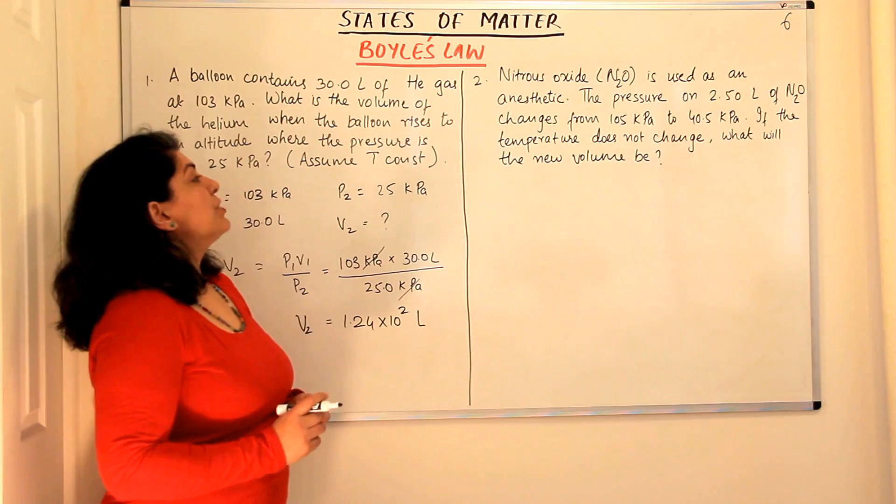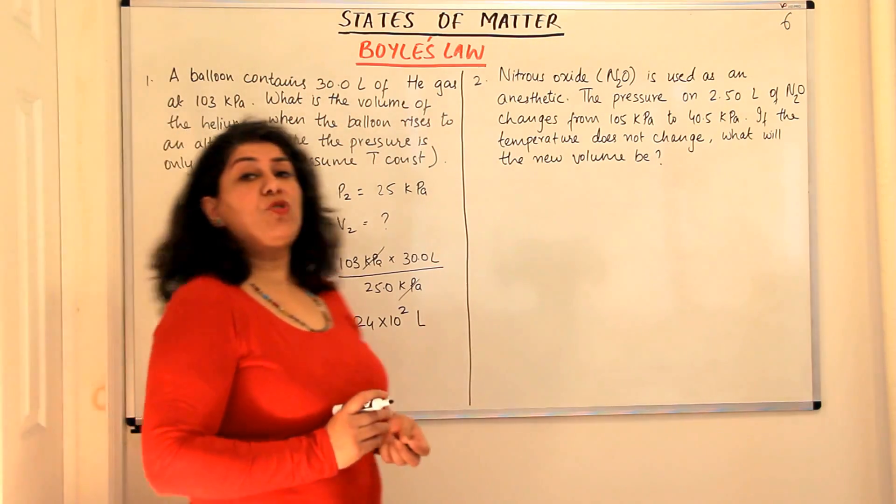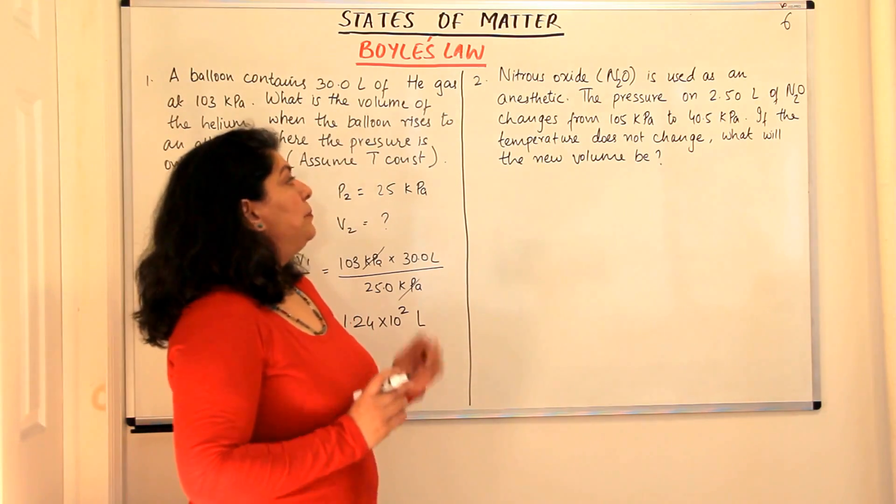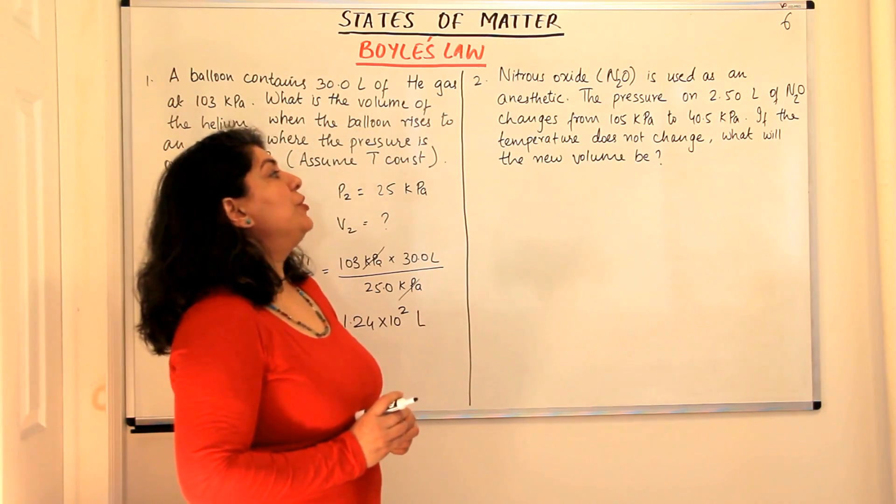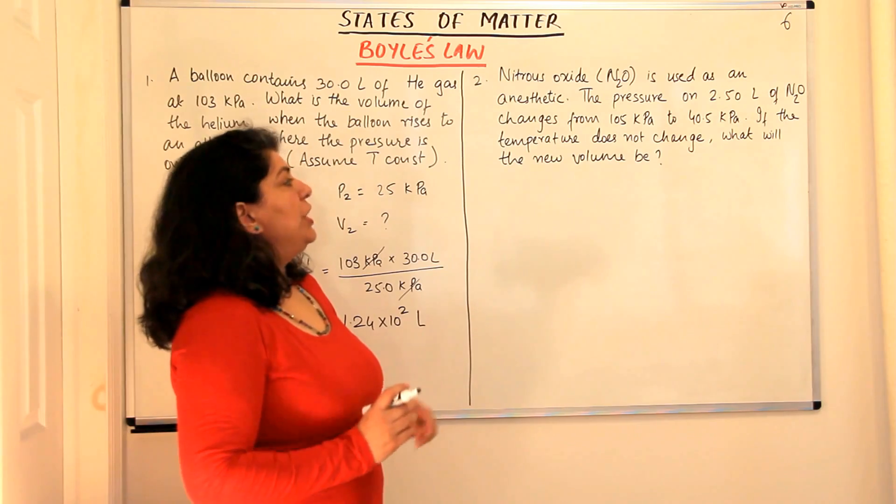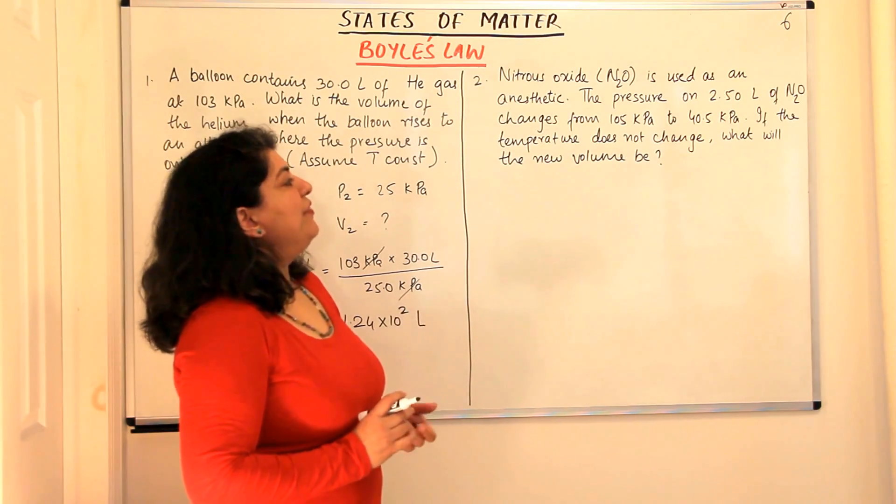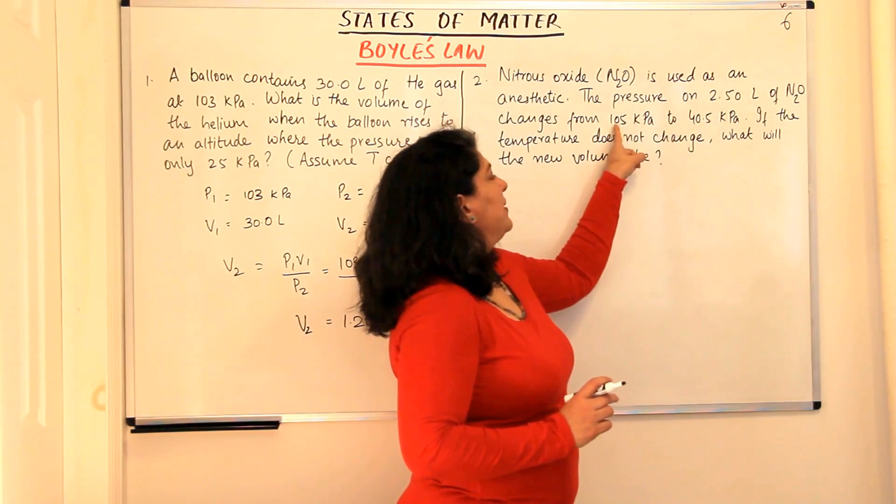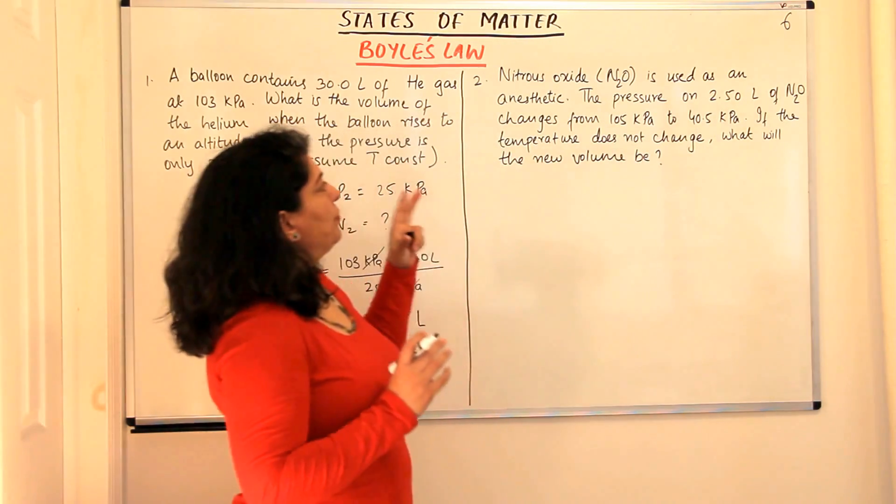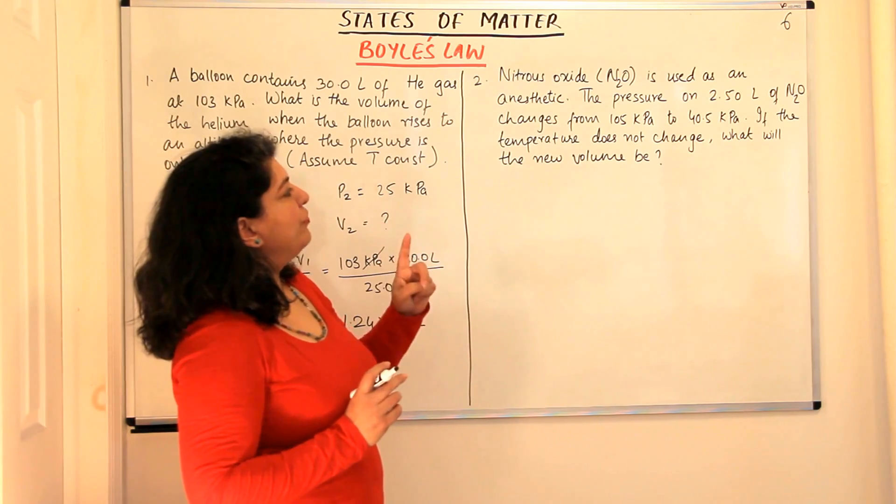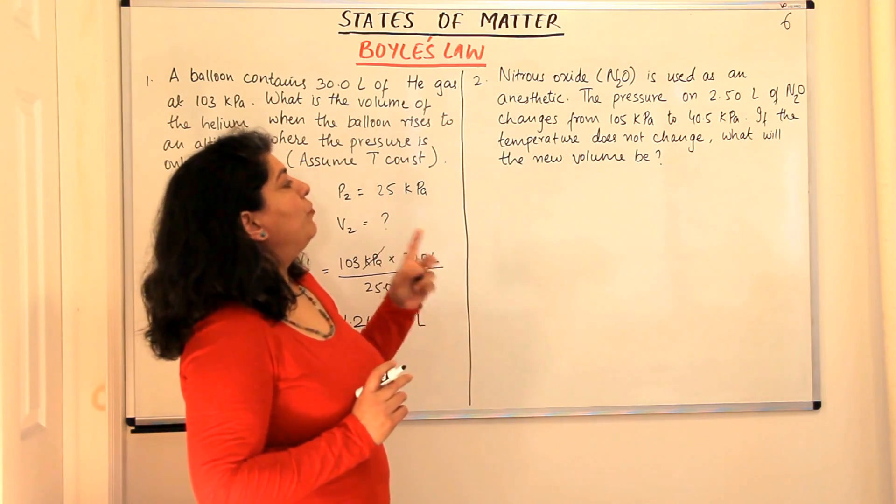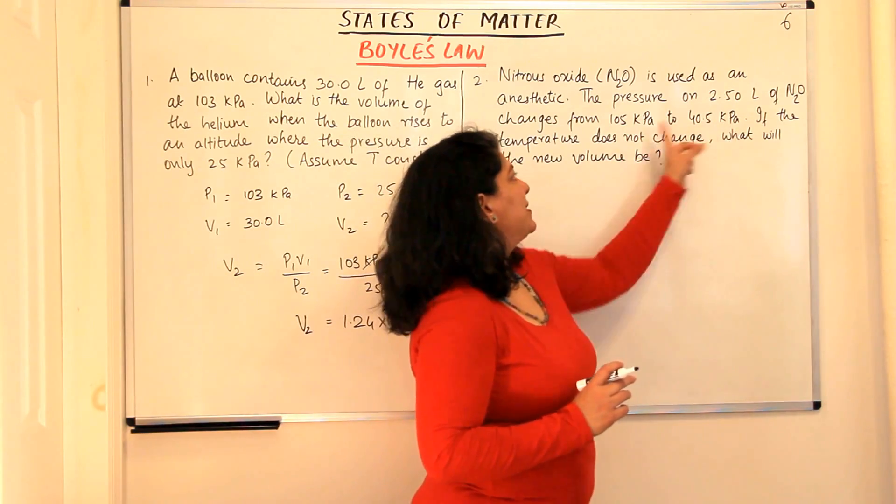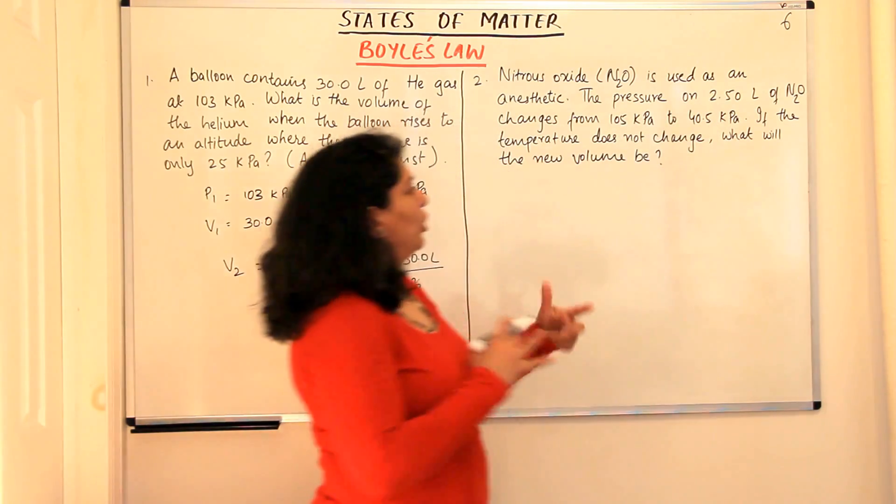Let us now move to the next problem. Nitrous oxide N2O is used as an anaesthetic. The pressure on 2.50 litres of N2O changes from 105 kilopascals to 40.5 kilopascals. Again the pressure is going down, so volume should increase.